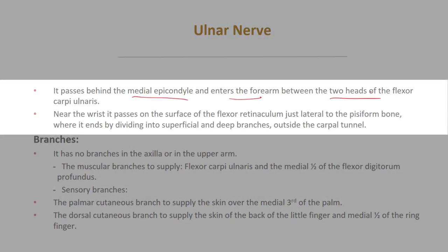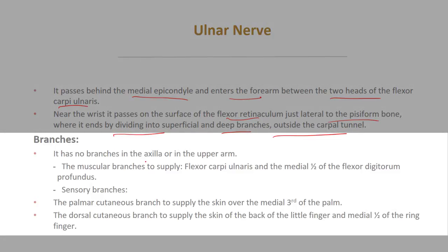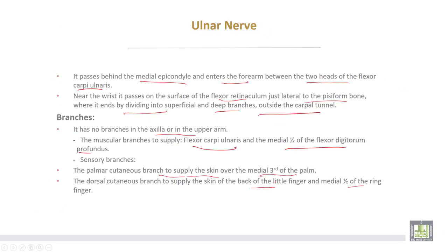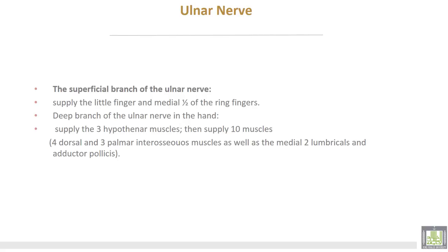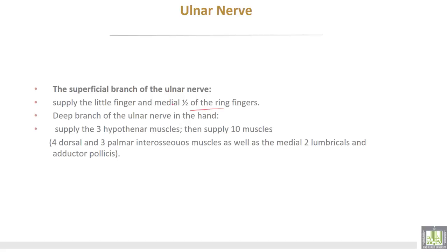The ulnar nerve passes behind the medial epicondyle and enters the forearm between the two heads of flexor carpi ulnaris. Near the wrist, it passes on the surface of the flexor retinaculum just lateral to the pisiform bone, where it ends by dividing into superficial and deep branches. It passes outside the carpal tunnel. Muscular branches supply flexor carpi ulnaris and the medial half of flexor digitorum profundus. Sensory branches include a palmar cutaneous branch to the medial third of the palm, and a dorsal cutaneous branch to the back of the little finger and medial half of the ring finger.